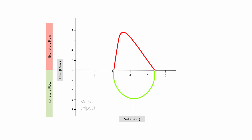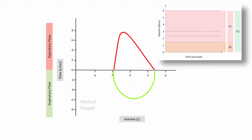Comparing the flow volume loop during maximal inspiration and expiration with the flow volume loop formed during normal quiet respiration shows a clear difference in shape. The change in the shape of the flow volume loop can aid in diagnosis and localization of airway obstruction.